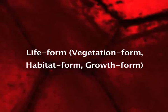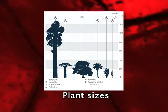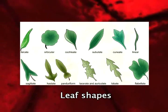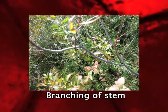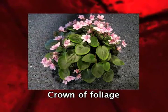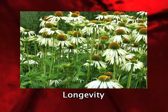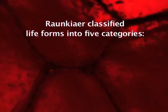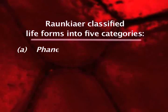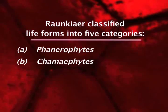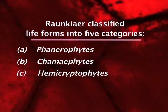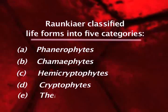Fifth is life form, vegetation form, habitat form, or growth form. It is the vegetative appearance of plants based on the size of plants, shape of leaves, branching of stem, crown of foliage, longevity, etc. Raunkiaer classified life forms into five categories: A. Phanerophytes, B. Chamaephytes, C. Hemicryptophytes, D. Cryptophytes, E. Therophytes.